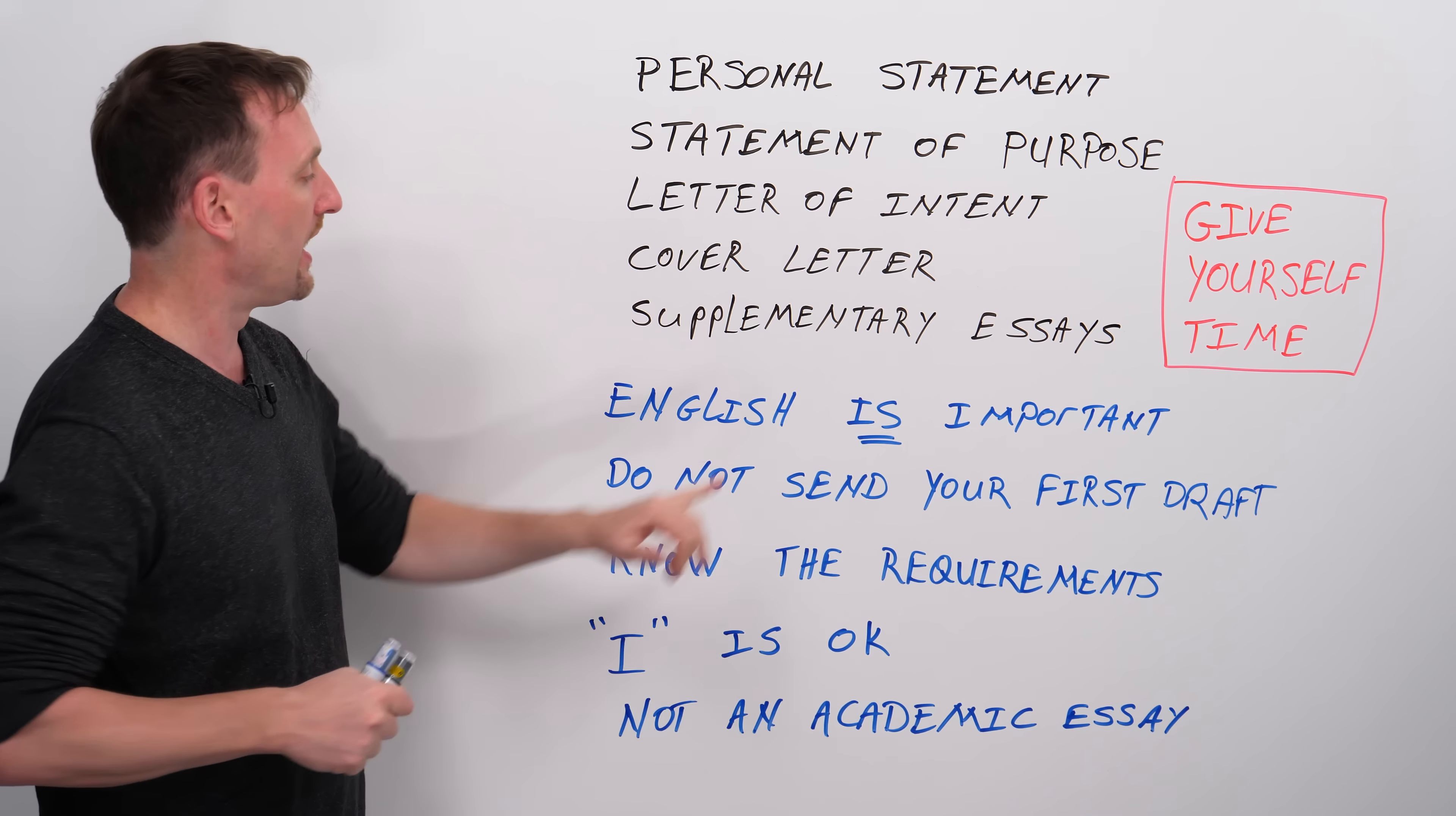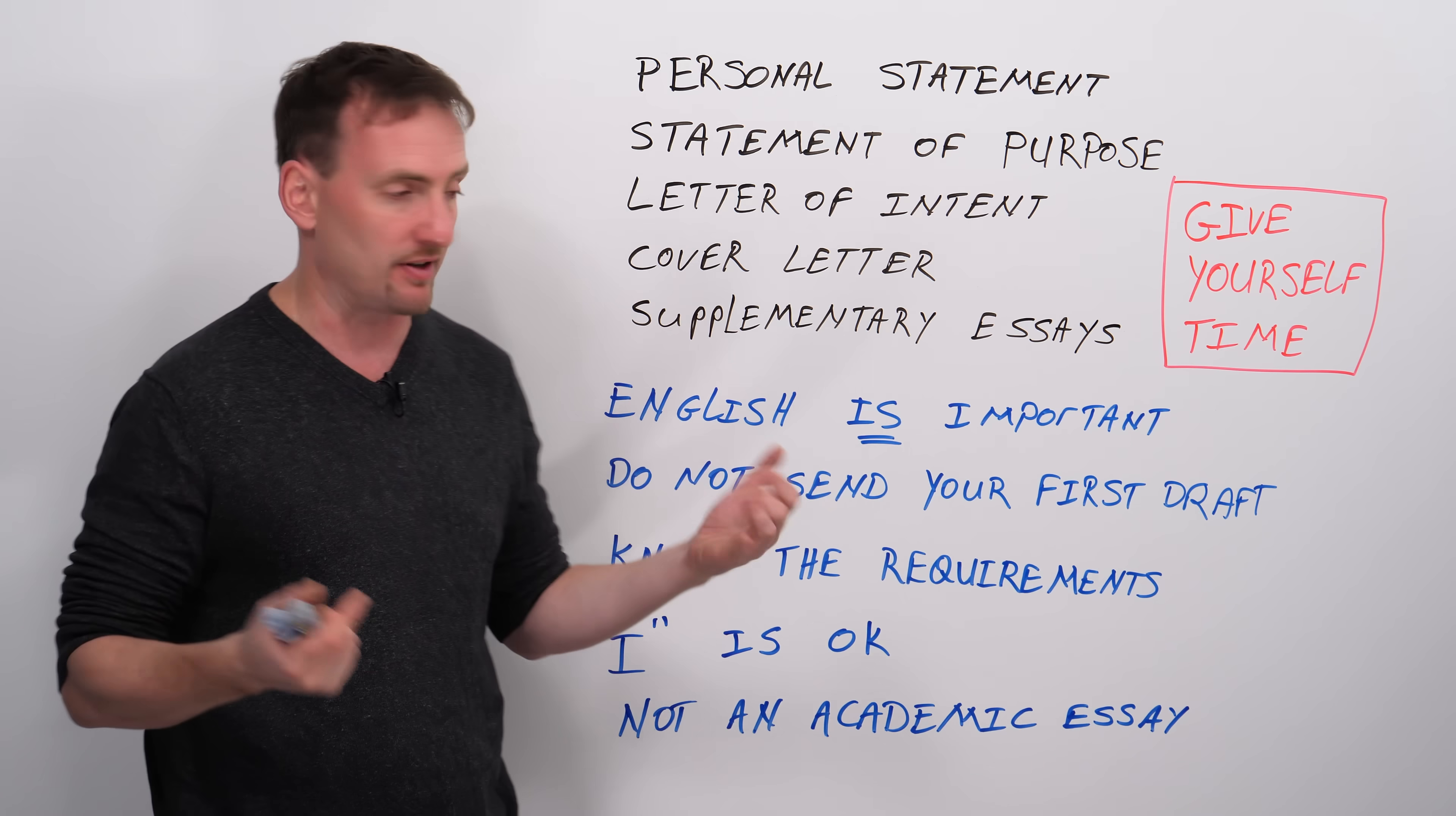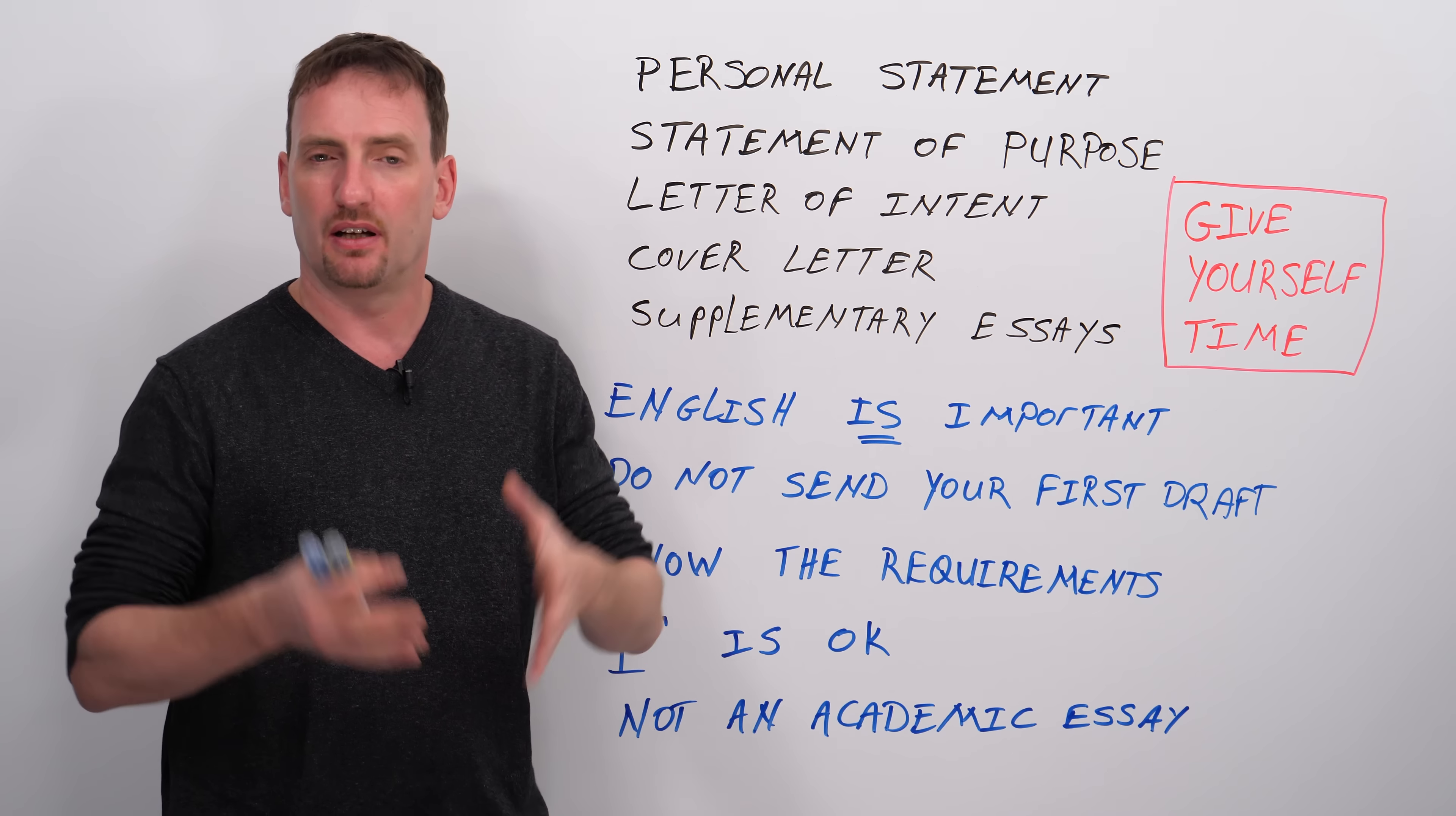American students, Canadian students, UK students, etc. When they know they're going to be applying for university, they start writing these things a minimum of six months before the application deadline, or before they're ready to submit. Some people start writing them a year before.